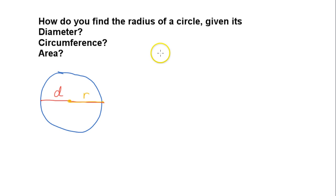So we could put that into a formula. We could say that the diameter equals 2 times the radius, or just divide each side by 2, and we get the radius equals the diameter over 2.